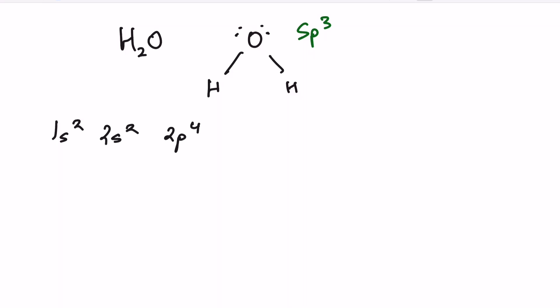So if we then were to draw this out, we'd see that our first s sublevel has two electrons in it. Our second s sublevel has two electrons. And then our p sublevel has 1, 2, 3, 4. It has two unpaired electrons in the p sublevel.